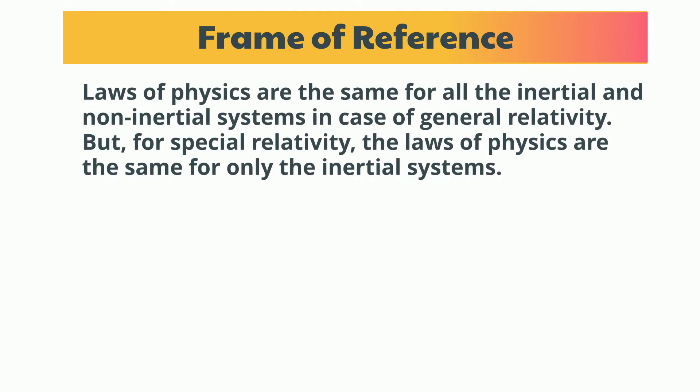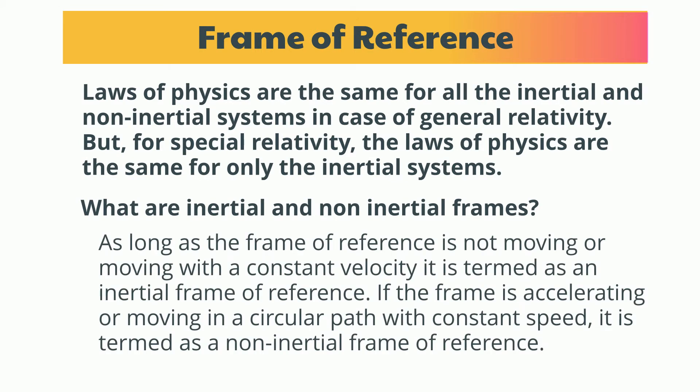Laws of physics are the same for all the inertial and non-inertial systems in case of general relativity, but for special relativity, the laws of physics are the same for only the inertial systems. Now the question is what are inertial and non-inertial frames? As long as the frame of reference is not moving or moving with a constant velocity, it is termed as an inertial frame of reference. If the frame is accelerating or moving in a circular path with constant speed, it is termed as a non-inertial frame of reference.